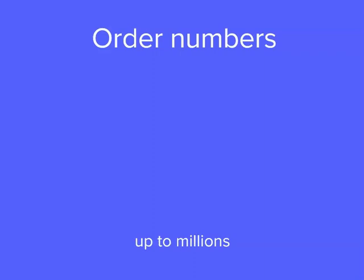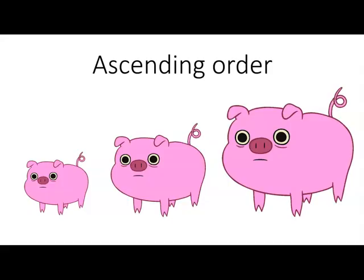If we want to order numbers up to the millions, we need to look at the place value of our numbers. Let's try ordering some numbers in ascending order. This means from smallest to largest.